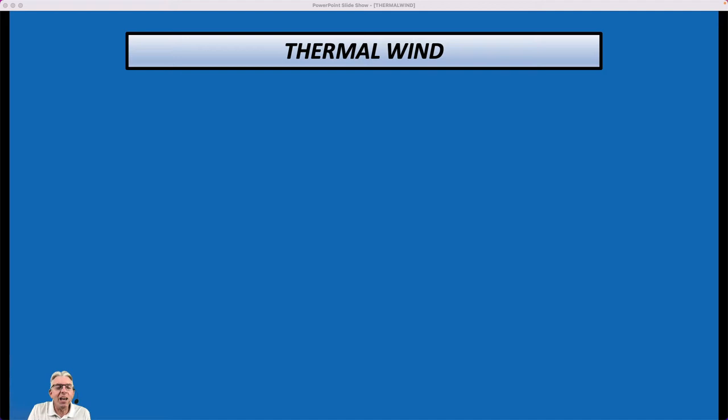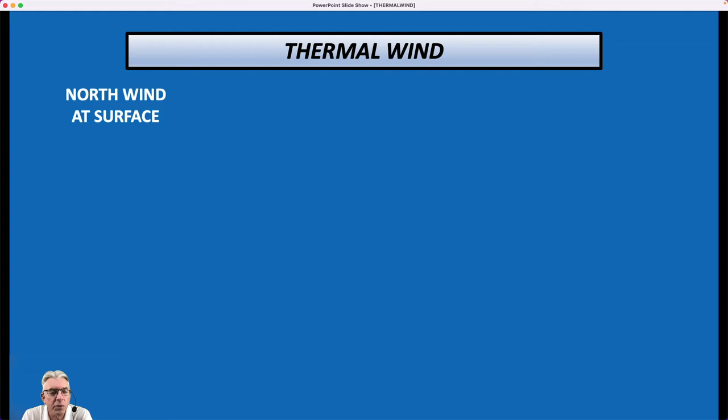So today we're going to talk about something called the thermal wind. Let's jump right into it. Let's assume that we have a wind coming from the north at the surface of the earth. When we say there's a north wind, that means it's from the north blowing toward the south. It's not blowing toward the north. The north indicates the direction it's coming from.